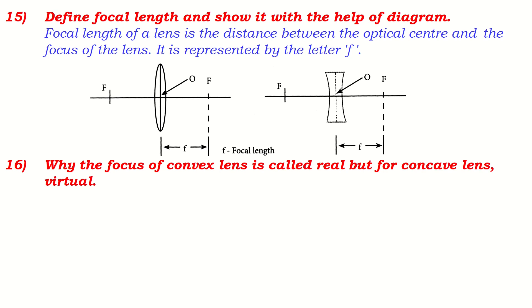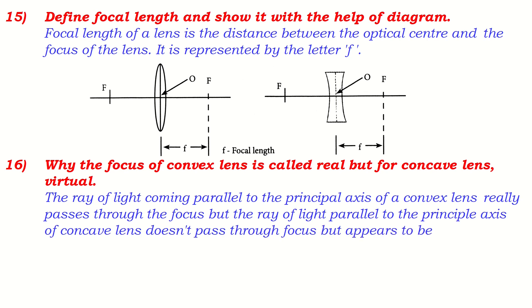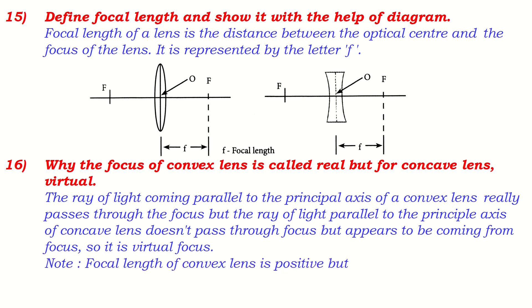Why is the focus of a convex lens called real but for a concave lens virtual? Because light really passes through the focus of a convex lens, but light does not pass through the focus of a concave lens — it only appears to come from that focus. Therefore, the focal length of a convex lens is positive, but the focal length of a concave lens is negative because its focus is virtual.